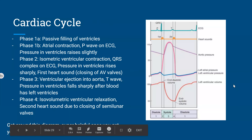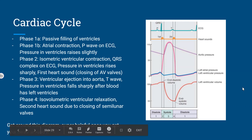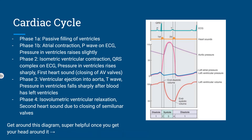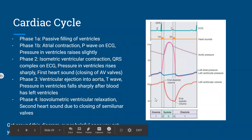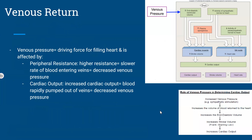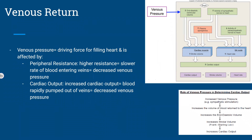The cardiac cycle diagram is really important to understand — if you can get your head around it you've nailed the cardiac cycle. There are all phases listed there. ECGs can be confusing at first, so just try to visualize what's happening at each phase. Venous pressure is the driving force of filling the heart and is affected by peripheral resistance and cardiac output. Cardiac output equals venous return.